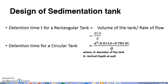The first one is for a rectangular tank: retention time t can be calculated as the ratio of volume of the tank to the rate of flow. The volume of the tank for a rectangular tank is B into L into H, where B is the breadth, L is the length, and H is the vertical depth.